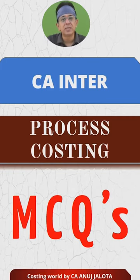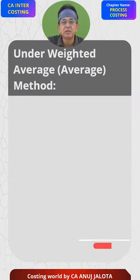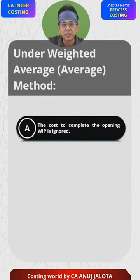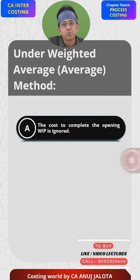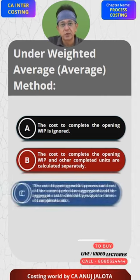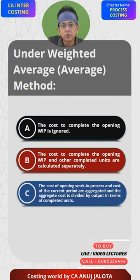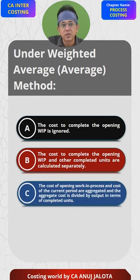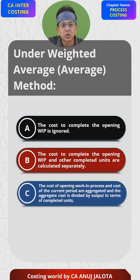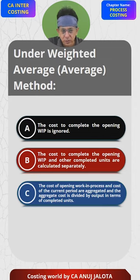Process costing MCQs. Under the weighted average method: A — the cost to complete the opening WIP is ignored. B — the cost to complete opening WIP and other completed units are calculated separately. C — the cost of opening WIP and cost of the current period are aggregated, meaning totaled up or added, and the aggregated cost is divided by output in terms of completed units. That will be C.